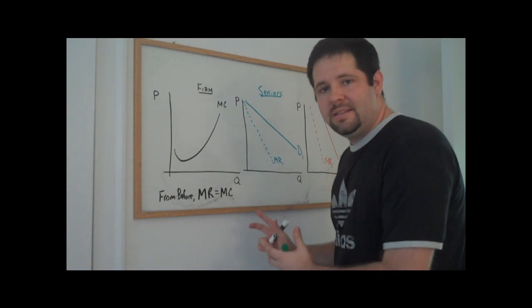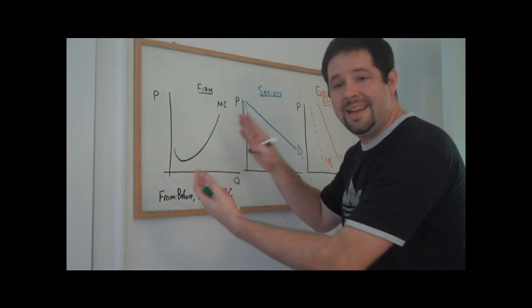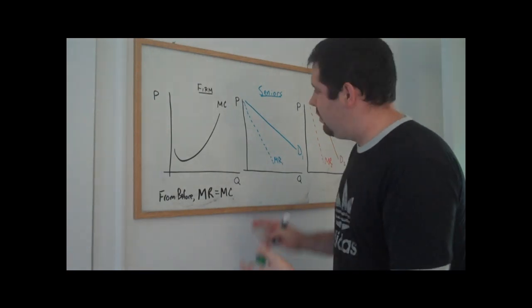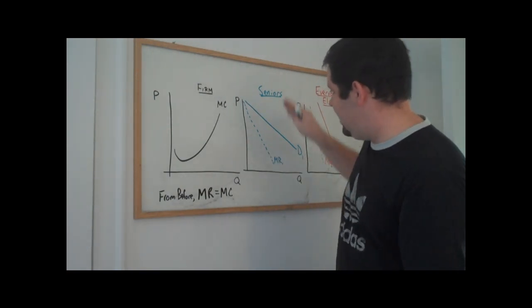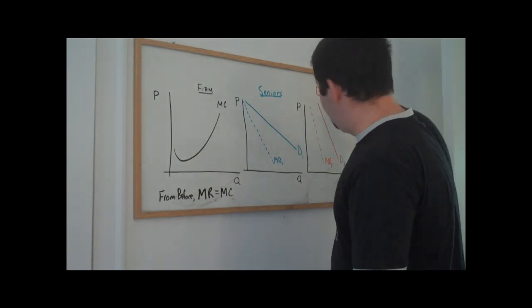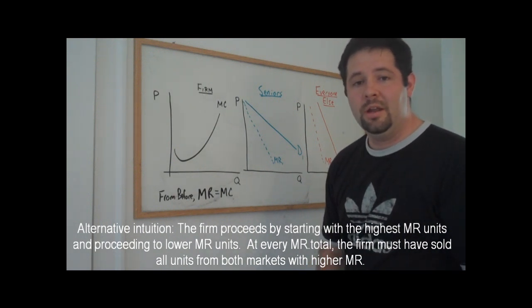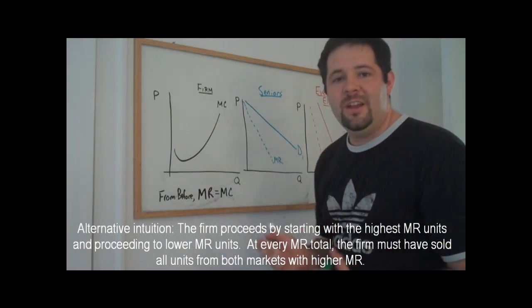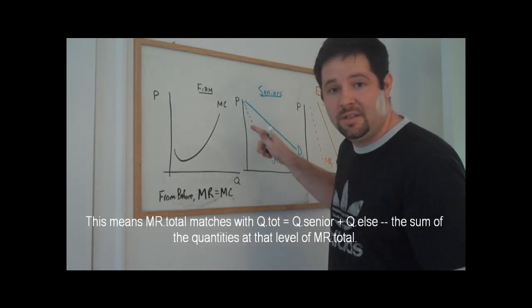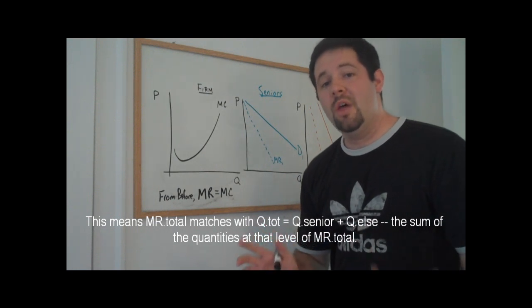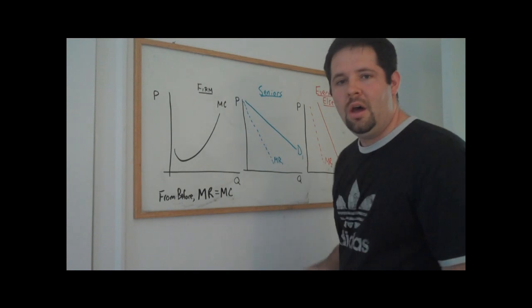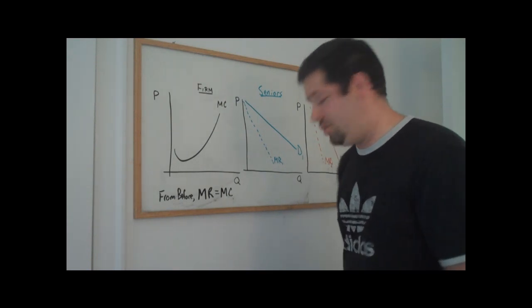In this setup, what we can do is add the marginal revenue curves horizontally. The reason being is that if we wanted to sell another unit, we could either sell that unit in the seniors market or in the everyone else segment of the market. The way we figure out how much marginal revenue is, we have the option to sell it in either market. So what we'll have is a marginal revenue curve that is the horizontal sum of these two component marginal revenue curves.